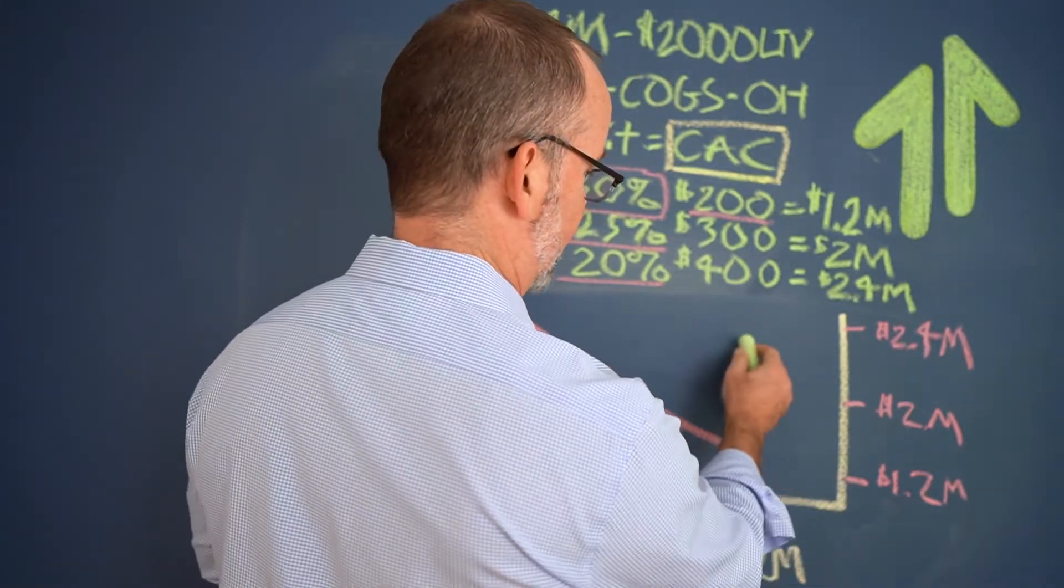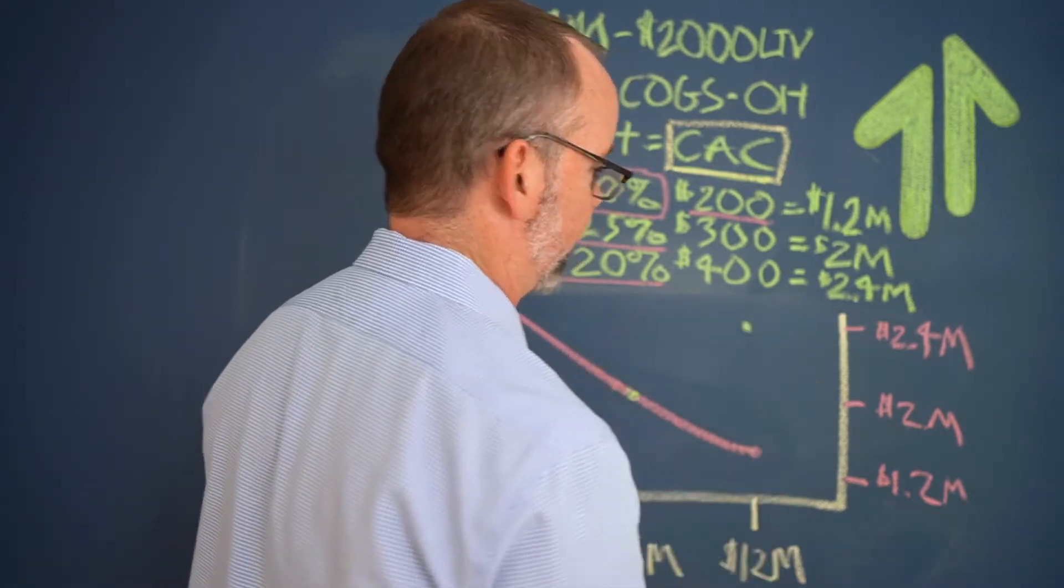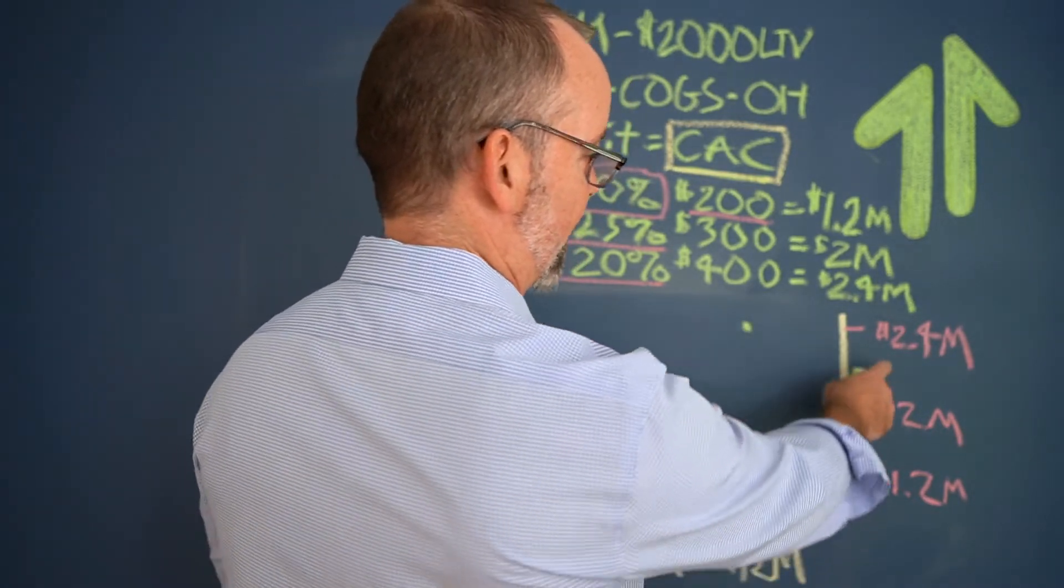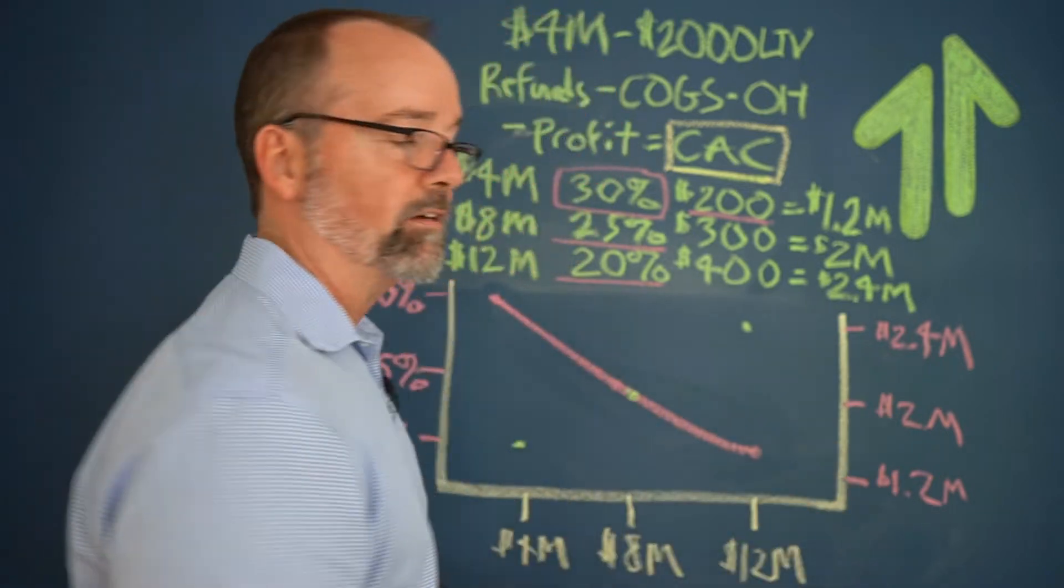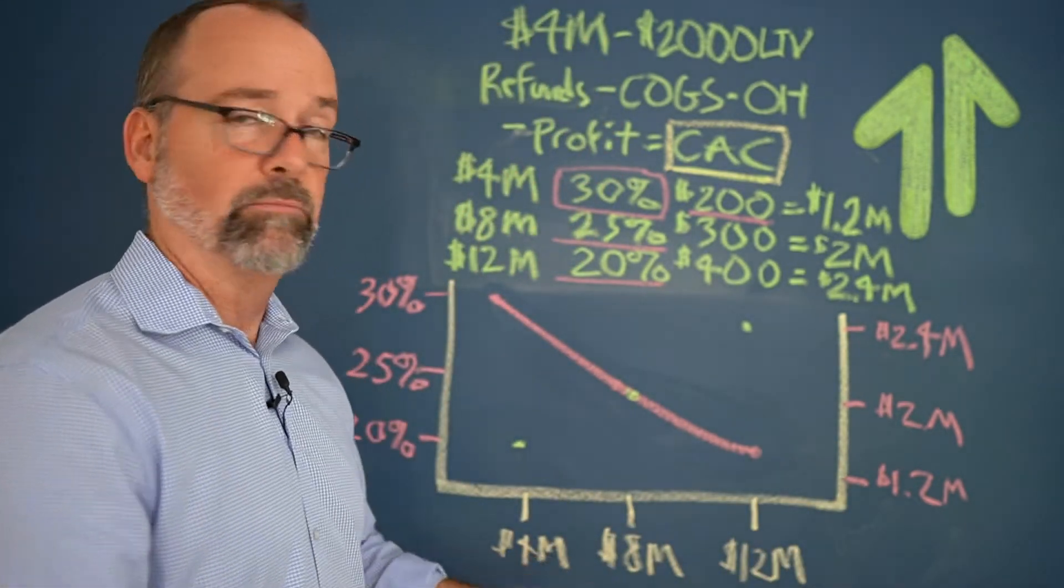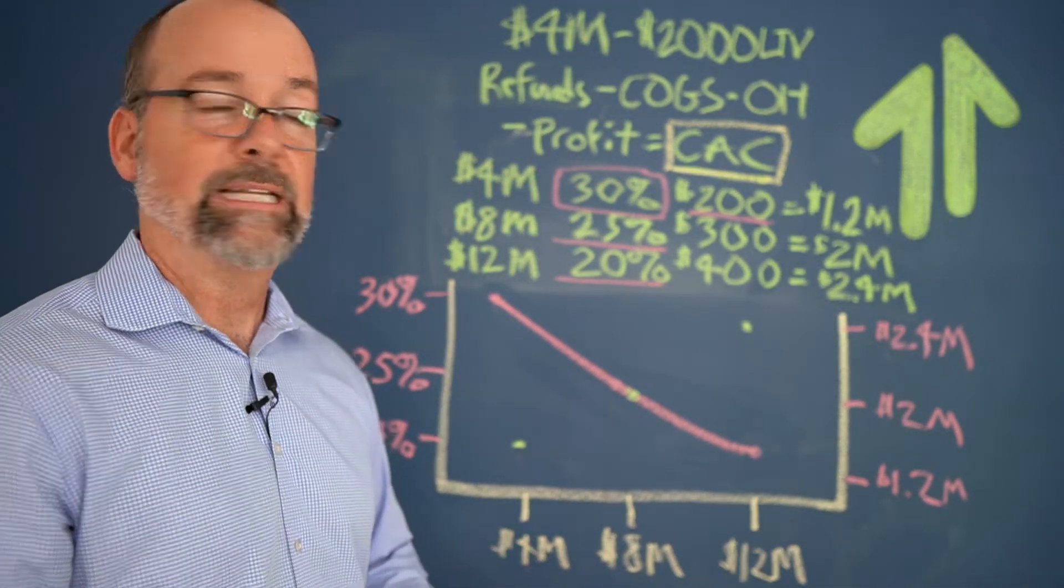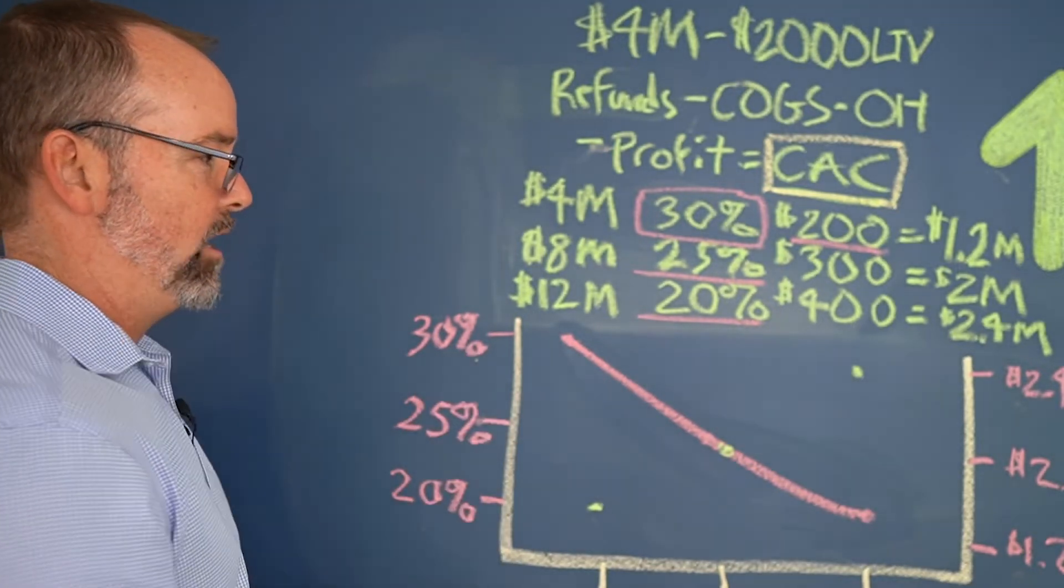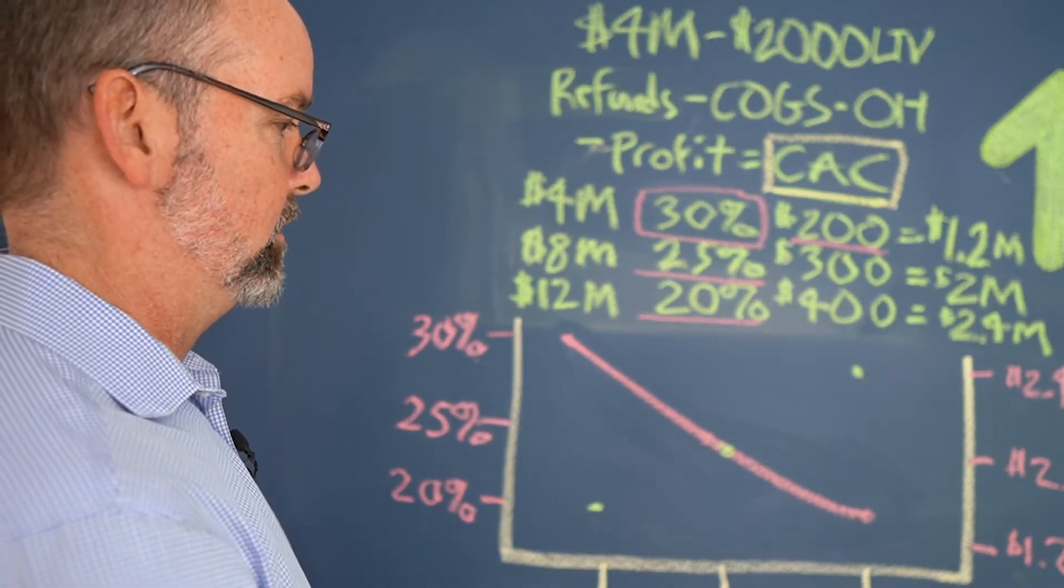And last but not least, as they triple in size up to 12 million in our hypothetical example, the net profitability is now 2.4 million, which is significantly more than where they were at 8 million, even though their profit goal is now a heck of a lot lower.